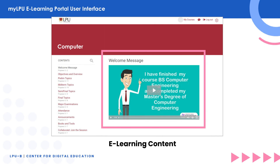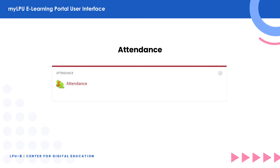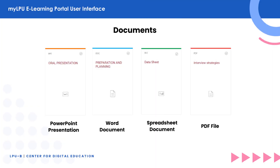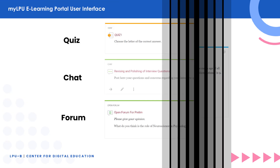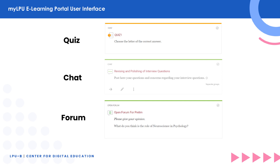On the main content, your professor or teacher will upload documents or learning activities. These are the following types: attendance, where you mark your attendance right after accessing MyLPU e-learning portal; learning materials including PowerPoint, Word, Excel, and PDF files; your professor may also upload a website link; and an assignment link where you must attach and upload your assignments on or before the given deadline. And lastly, we have quizzes, chat, and open forums.